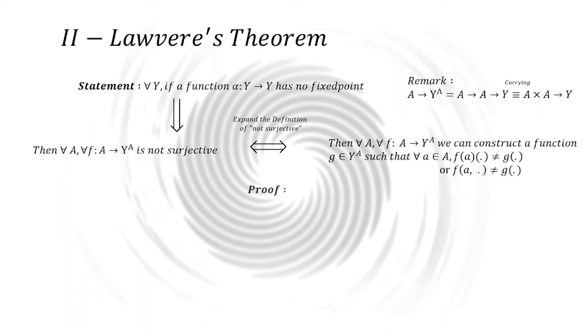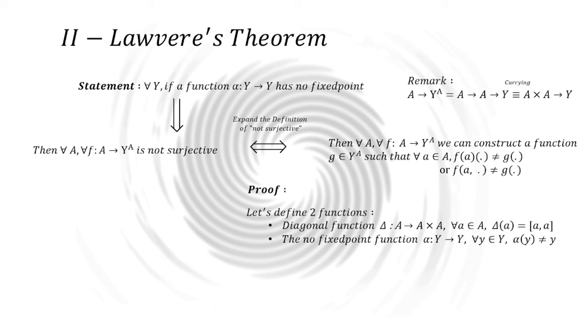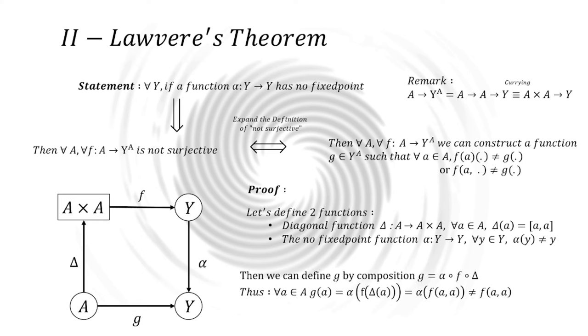For the proof, we will consider the latter. So, let's begin the proof. Our goal is to construct the function G. We will define two functions for this aim. First, the diagonal function, delta, which takes a variable a and returns a pair of that same variable. Then, the no fixed point function alpha, for all y of capital Y. Alpha of y is always different of y. Now, we define G by composition. G is alpha of F of delta.